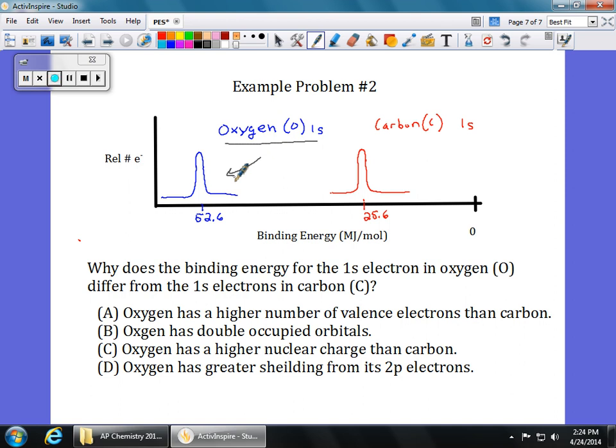Choice A, oxygen has a higher number of valence electrons than carbon. B, oxygen has a double occupied orbitals. Okay, maybe that means something. Oxygen has a higher nuclear charge than carbon. And then oxygen has a greater shielding from its 2p electrons.